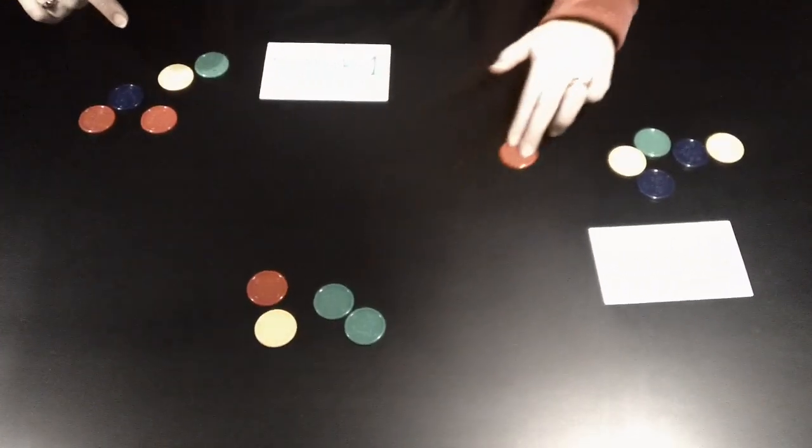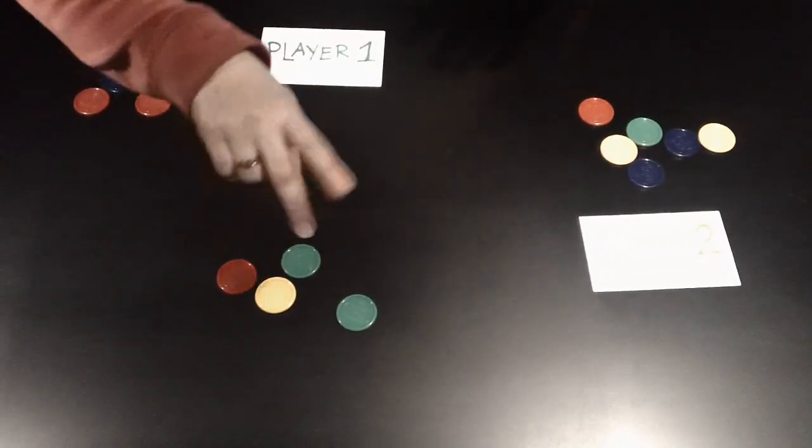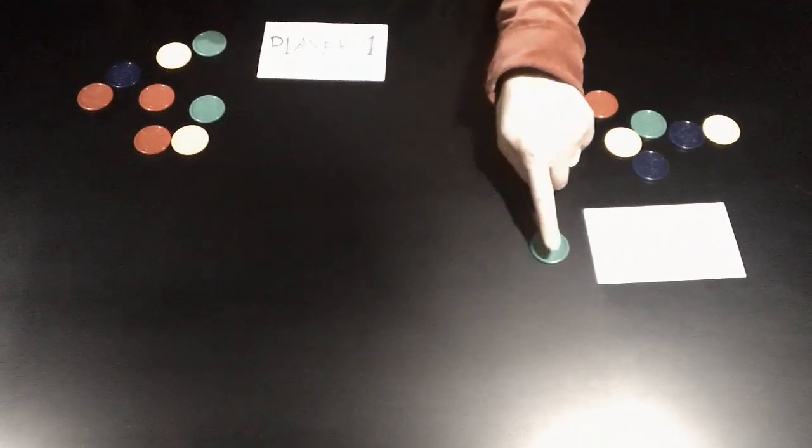Player two takes one. Player one can take three because you can take one, two, or three every time. Guess what? Player two just lost because they took the last object.